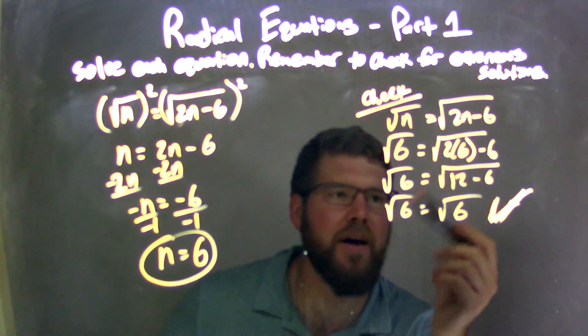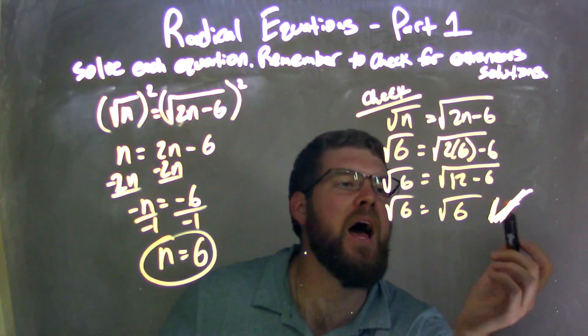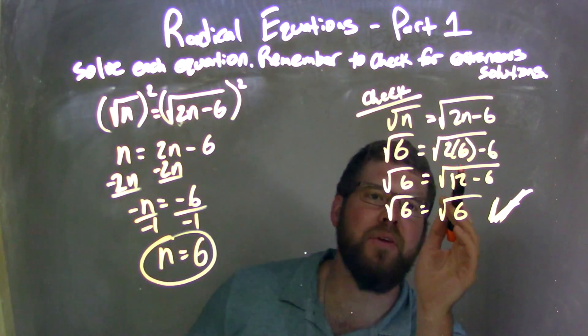The left-hand side didn't need to be simplified. So we have the square root of 6 on the right and square root of 6 on the left now. That is equal, they are equal. So we check off. We're good. No extraneous solutions. And confirms that n equals 6 is my final answer.